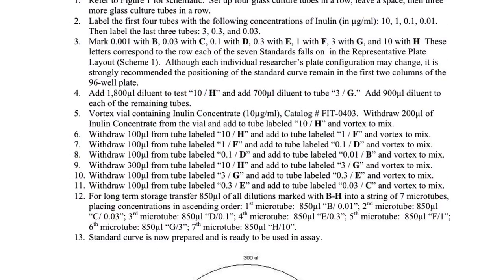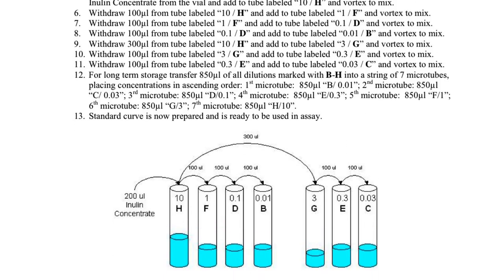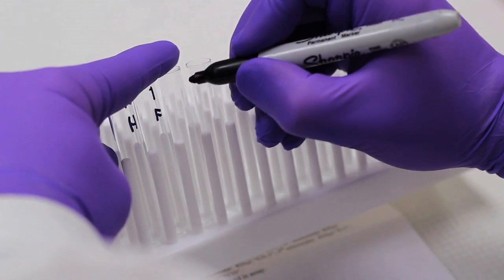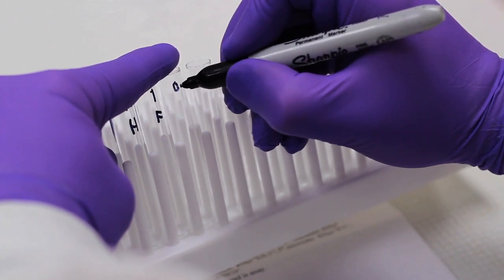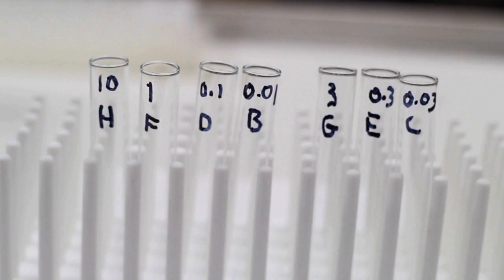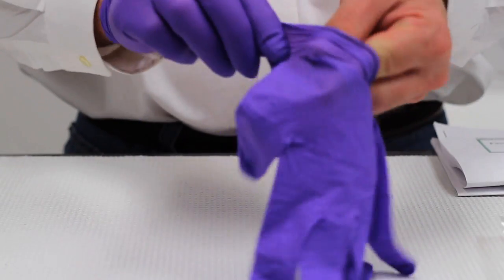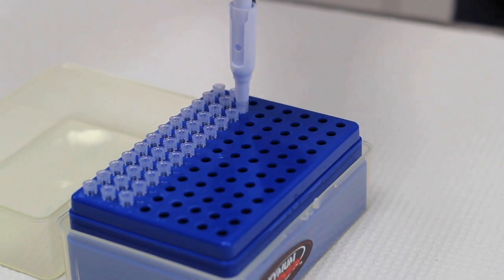We will now prepare the standards using the last page of the worksheet, which provides a step-by-step procedure. First, label seven test tubes as shown in the diagram and rack them accordingly, leaving a large space between test tube B and G. Next, accurately pipette 1800 microliters of standard diluent into test tube H, 700 microliters into test tube G, and 900 microliters into the remaining tubes. Make sure to practice good laboratory technique by using accurately calibrated pipettes and replacing the tip during each transfer to avoid contamination.